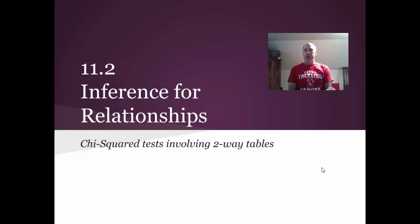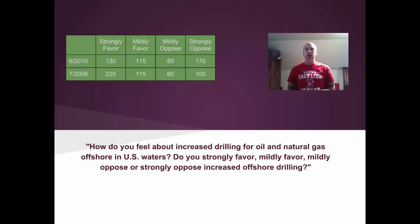This video is for section 11.2, Inference for Relationships, and here we're going to take a look at chi-square tests involving two-way tables. These are different than our goodness of fit tests where they only dealt with one distribution, one column of data. Here we're going to have a two-way table where we take multiple distributions and try to compare them. Let's dive right into the example in our notes.